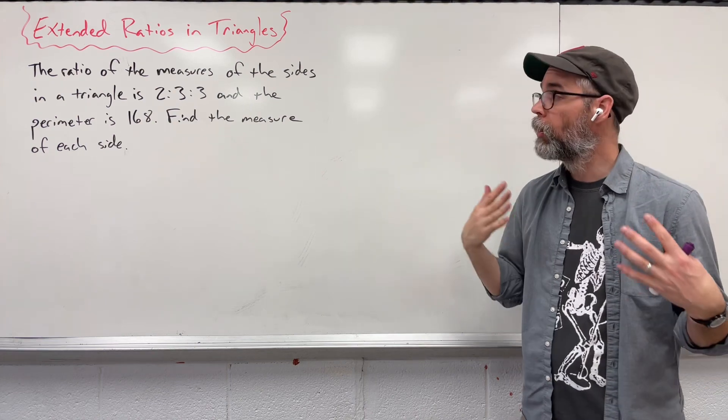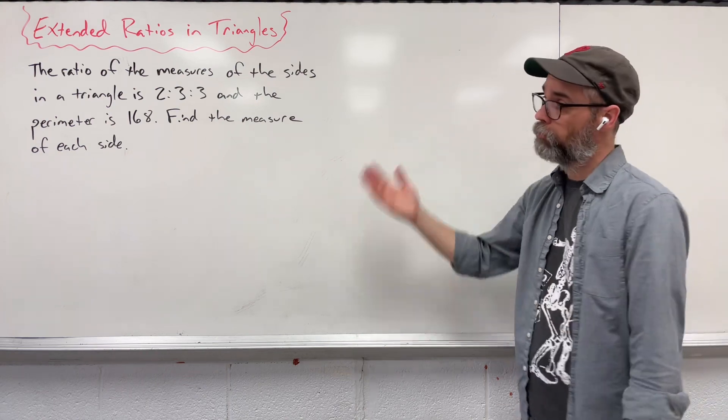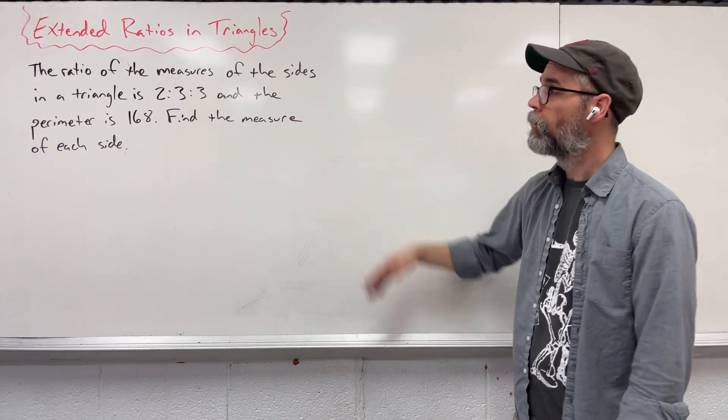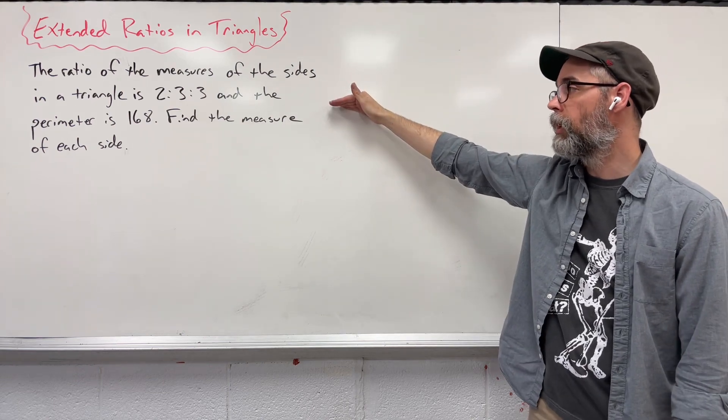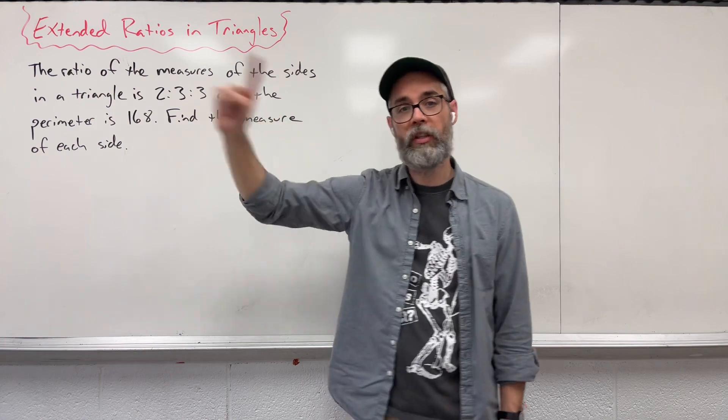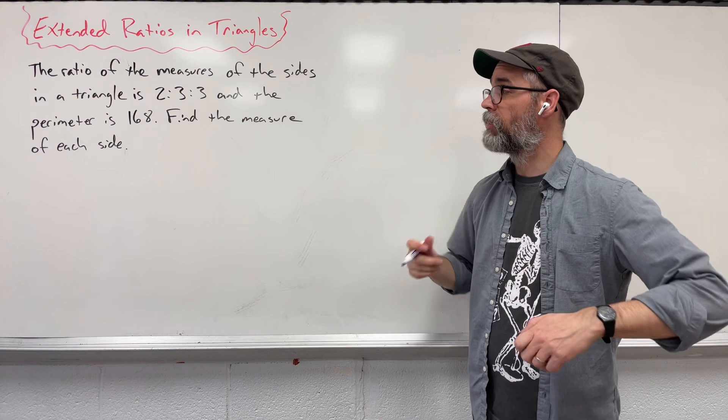so three, four, five numbers with each other, and we can use it to create an equation and solve for missing sides. So the ratio of measures of the sides of a triangle is 2 to 3 to 3, and we know the perimeter, the distance around that triangle, is 168. We want to find the measure of each side.